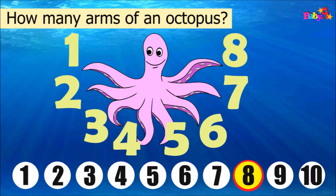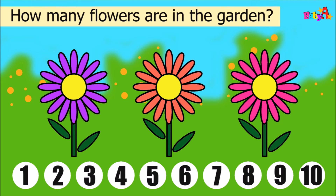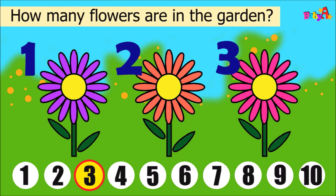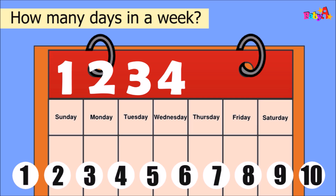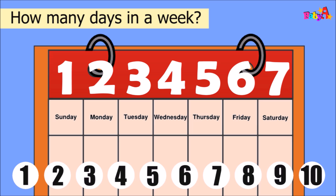How many flowers are in the garden? 1, 2, 3, 4, 5, 6, 7. Seven days are in a week.